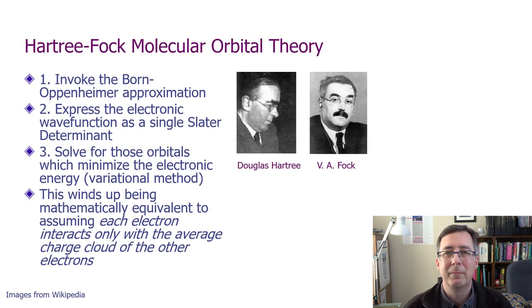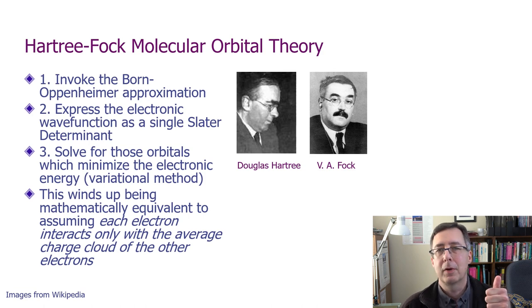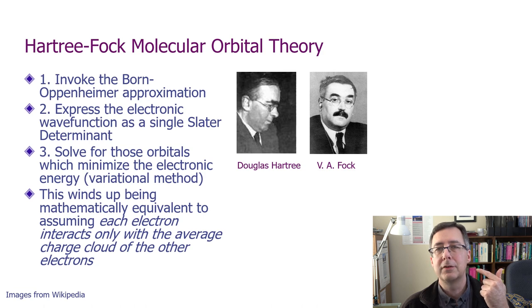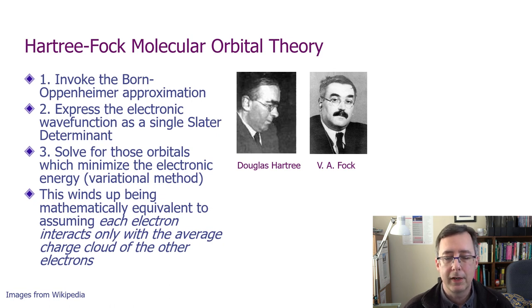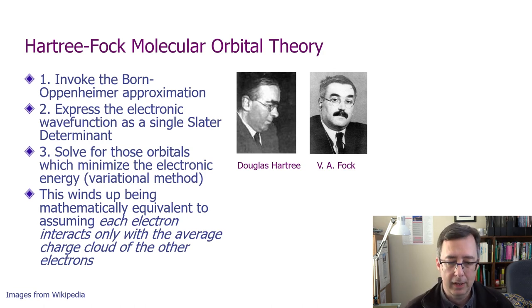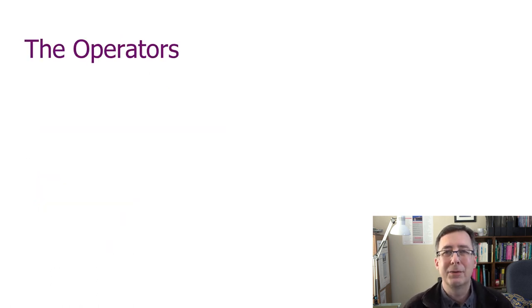Now let's talk about what you do in Hartree-Fock molecular orbital theory. You invoke the Born-Oppenheimer approximation to get the electronic Schrödinger equation. Then you say you're going to use a single Slater determinant as your wave function. Then you invoke the variational theorem and say those orbitals are going to be the ones that minimize the energy. It turns out those assumptions wind up being equivalent to assuming that each electron sees just an average charge field due to the other electrons, and that averaging is what introduces a little bit of error to this procedure.